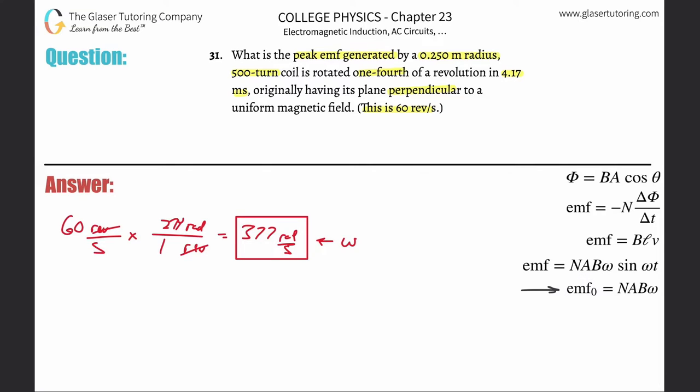V sub P for peak voltage. Peak voltage V_P equals the number of turns N multiplied by the cross-sectional area A, multiplied by the external magnetic field B, multiplied by the angular velocity ω. That's why I'm calculating ω, so I can plug it in. Now we just need to plug in the rest.